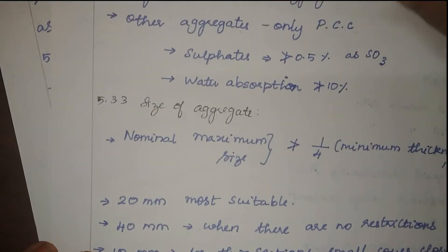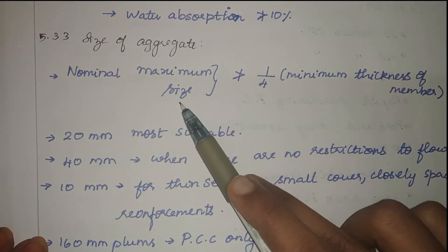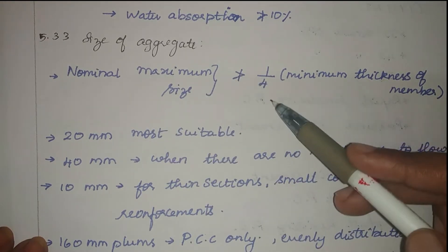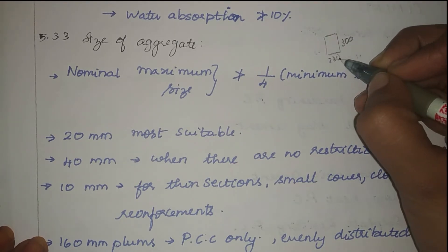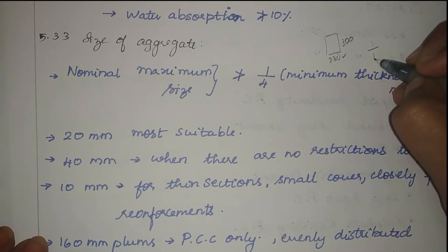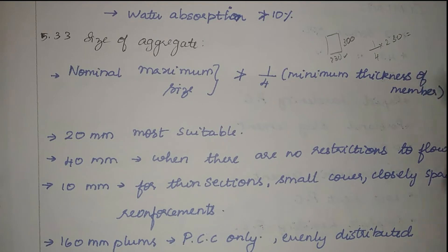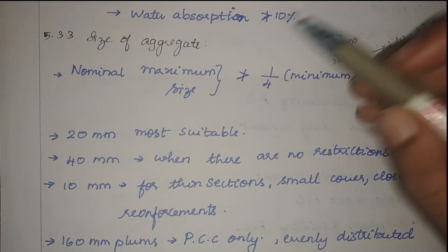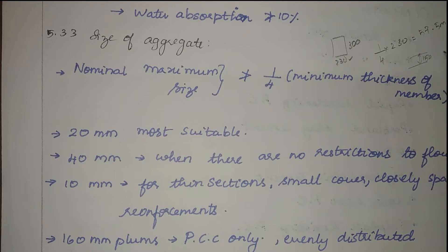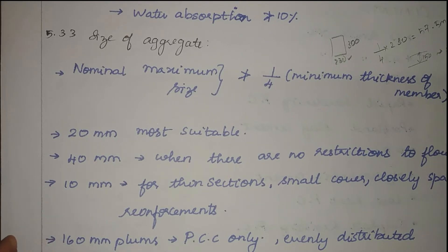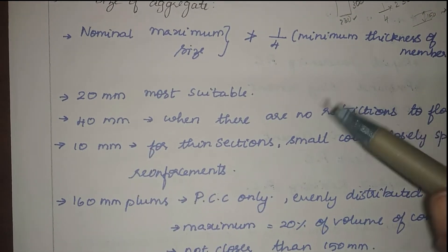The size of aggregate is very important. The nominal maximum size should not be greater than one-fourth of the minimum thickness of a member. For example, for a beam of 230×300 mm, the minimum thickness is 230 mm, so the maximum aggregate size should not exceed 230/4 = 57.5 mm. For a slab of 150 mm thickness, the limit is 37.5 mm. Generally, 20 mm aggregates are most suitable.